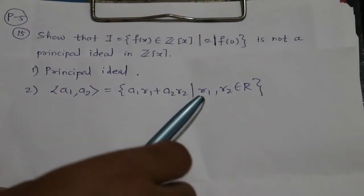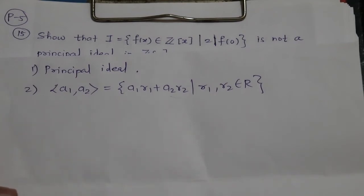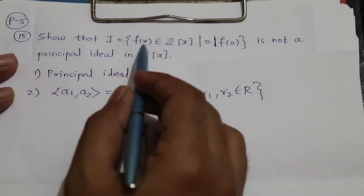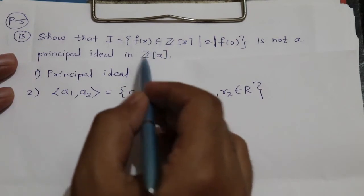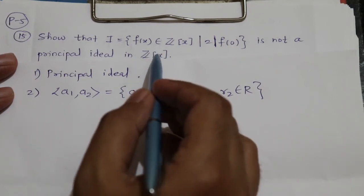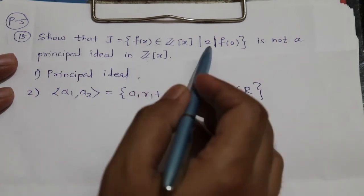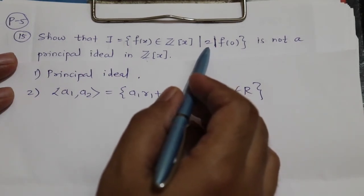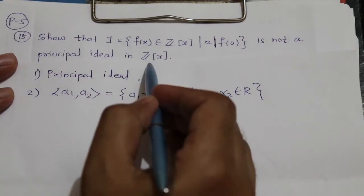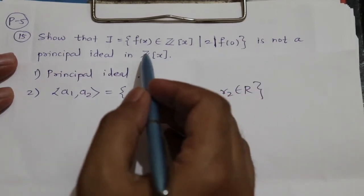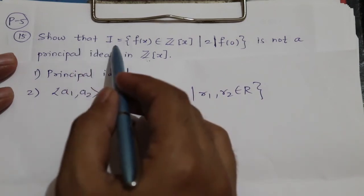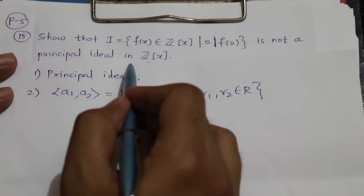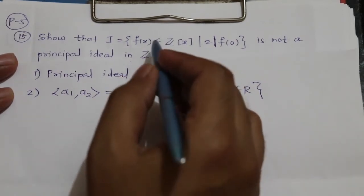Today we are going to discuss one example: show that I = {f ∈ ℤ[x] : 2 divides f(0)} is not a principal ideal in ℤ[x], where ℤ[x] stands for the polynomial ring with coefficients from ℤ. We want to show that this ideal I is not a principal ideal in ℤ[x].